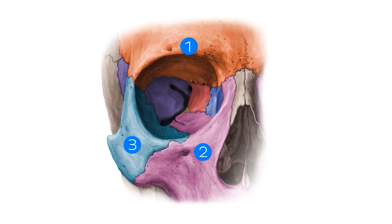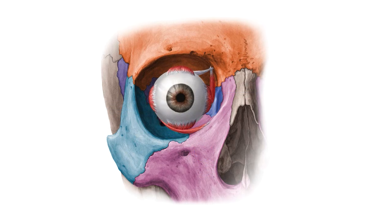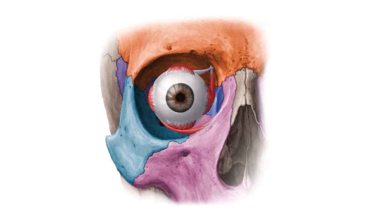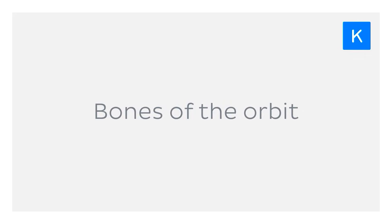For example, did you know that the orbit is actually formed from as many as seven different bones? These form a somewhat delicate cavern which must accommodate the eyeball along with its accompanying muscles, nerves and blood vessels. This tutorial will prove to be an anatomical treasure if you stay with me as we explore the bones of the orbit.